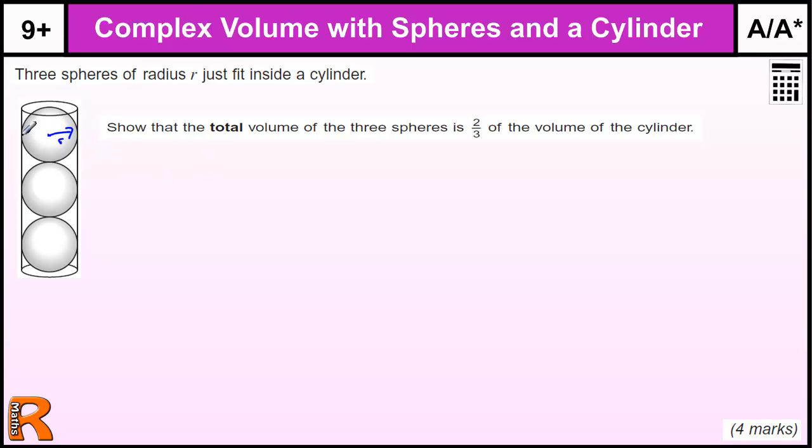That tells us our cylinder has a diameter of 2R, the width of the cylinder is 2R. I don't actually need to know that - I need to know the radius is R.